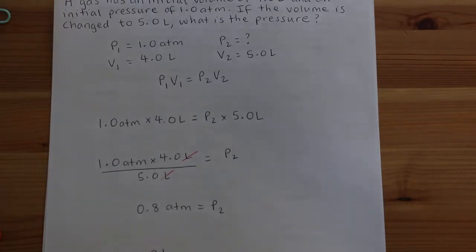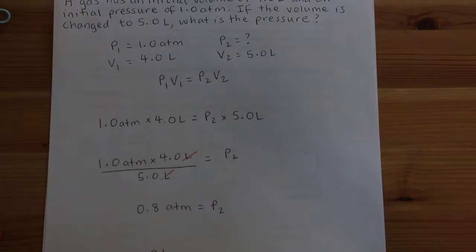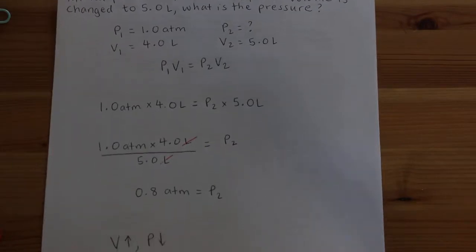The last step in a Boyle's Law question is a common sense check. Volume changed from 4.0 liters to 5.0 liters, so volume went up. According to Boyle's Law, if volume went up, pressure must have gone down. Our initial pressure was 1.0 atmospheres and we calculated the final pressure to be 0.8 atmospheres, which is less than the initial pressure — so it makes sense.